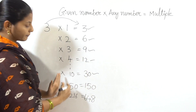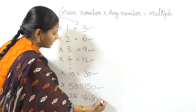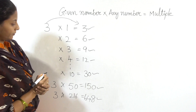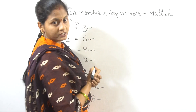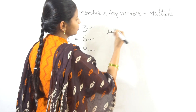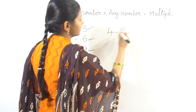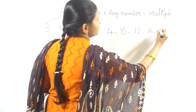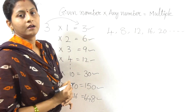3 multiplied by a number gives us the product, which is a multiple. For example, multiples of 4: 4 ones are 4, 2 fours are 8, 3 fours are 12, 4 fours are 16, 4 fives are 20, and so on.